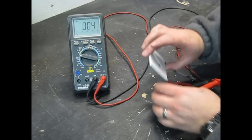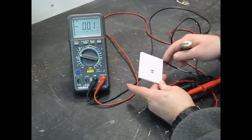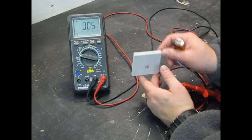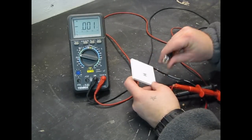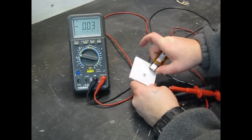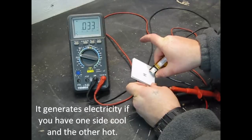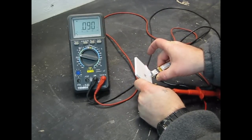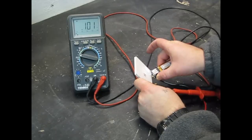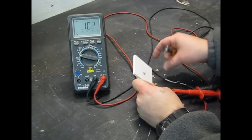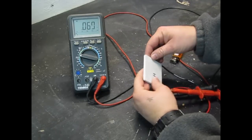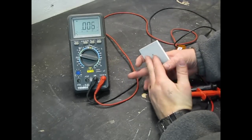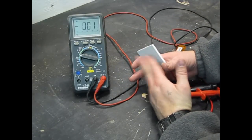So I take the TEC and I've already figured out previously that this is the side that gets hot. So if we heat this side, we got up to one tenth of a volt there. But I don't have a good heat sink over here to dissipate the heat.